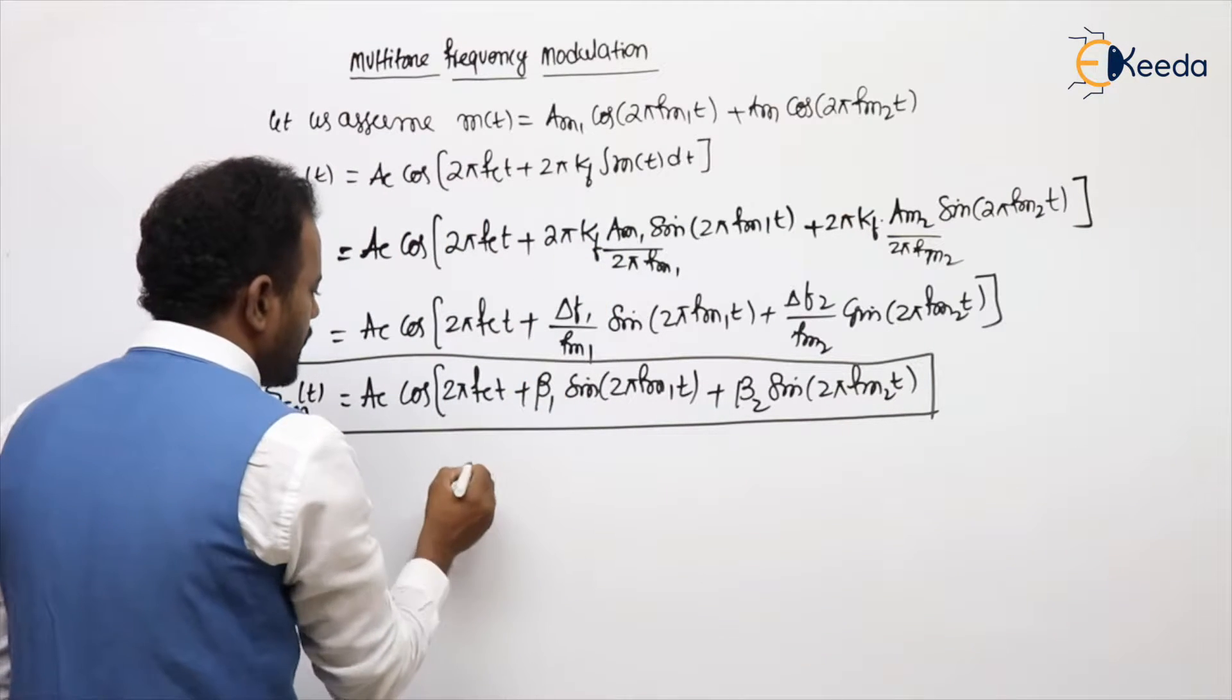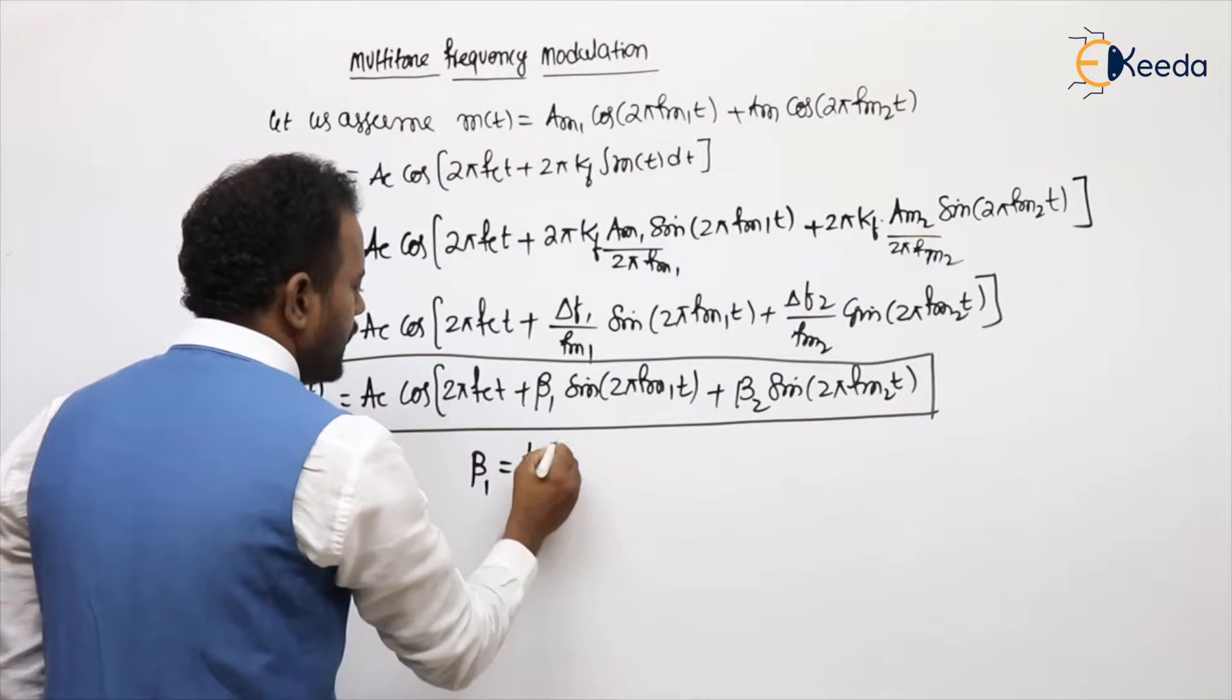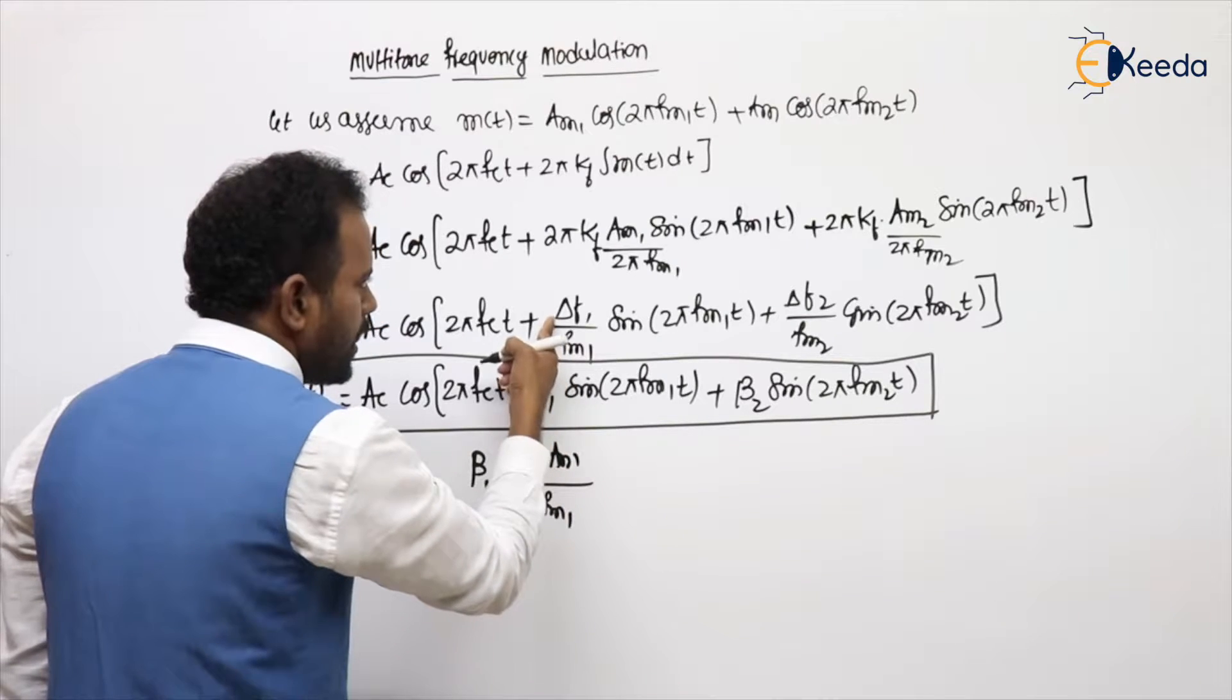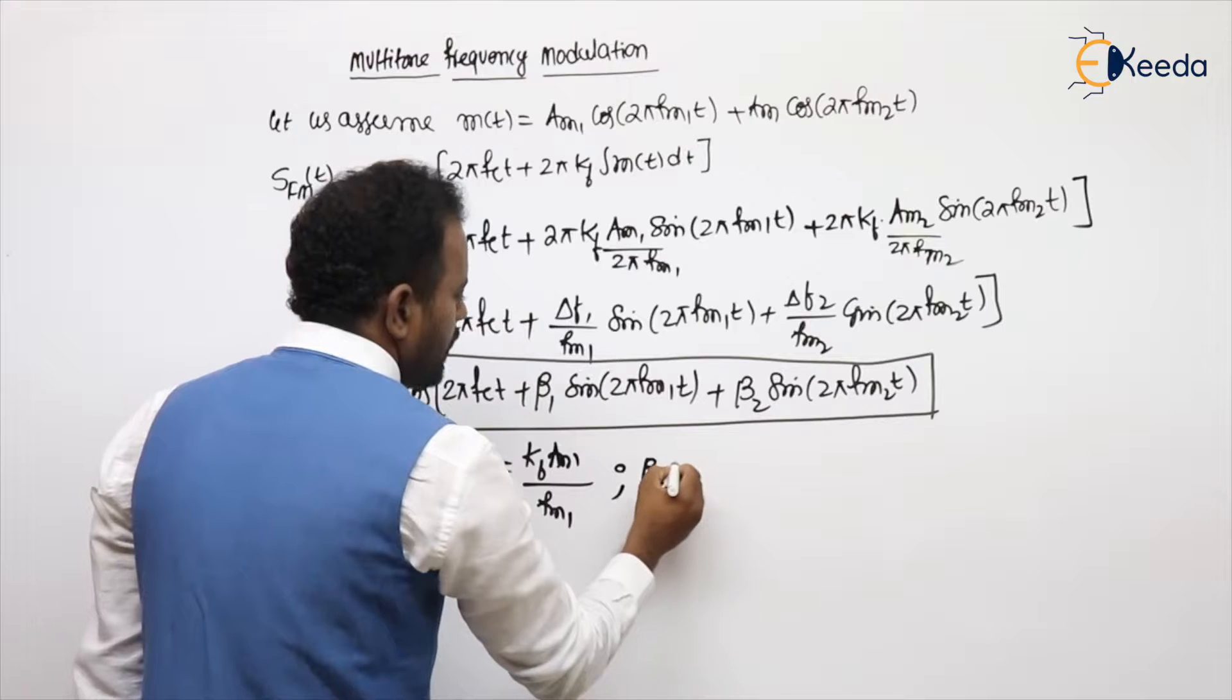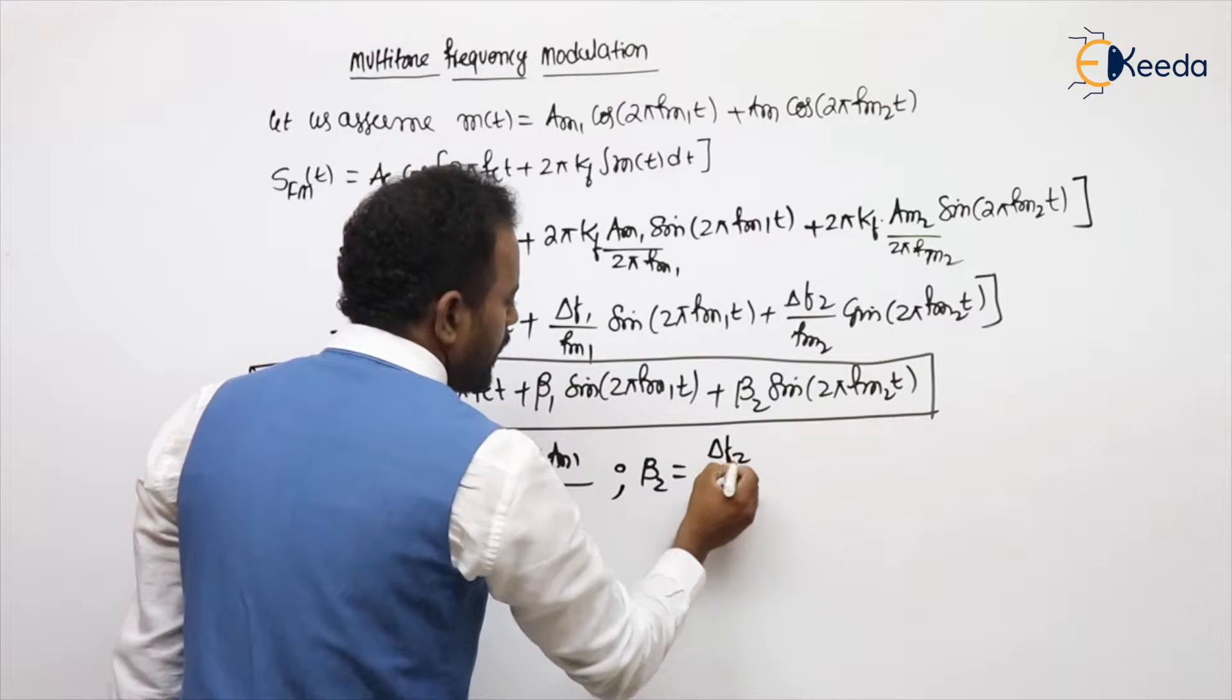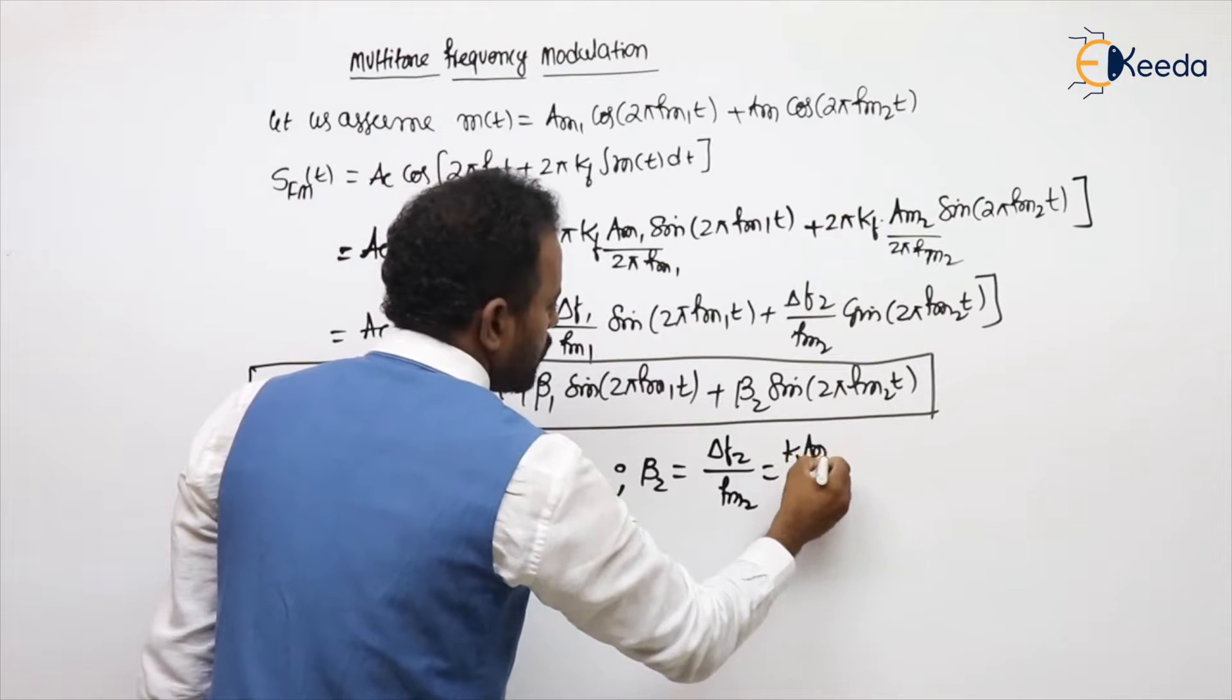If you observe there, first modulation index is kf Am1 by fm1 or Δf1 by fm1.